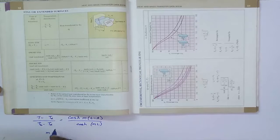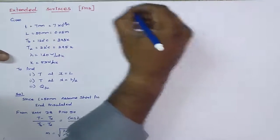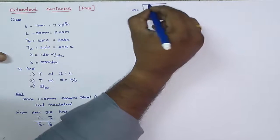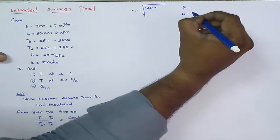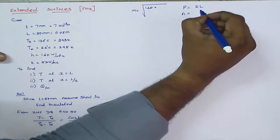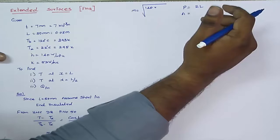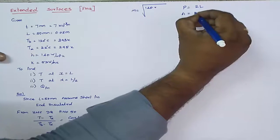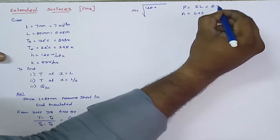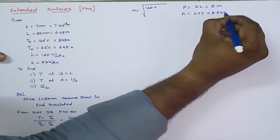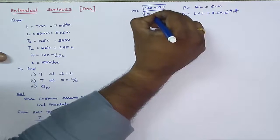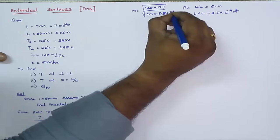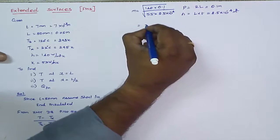Now M = root of HP divided by KA. First find out the value of M. Perimeter = 2L and area = L×T. Substituting: M = root of (140 × 0.1) divided by (55 × 3.5×10⁻⁴). So the M value becomes 26.96.